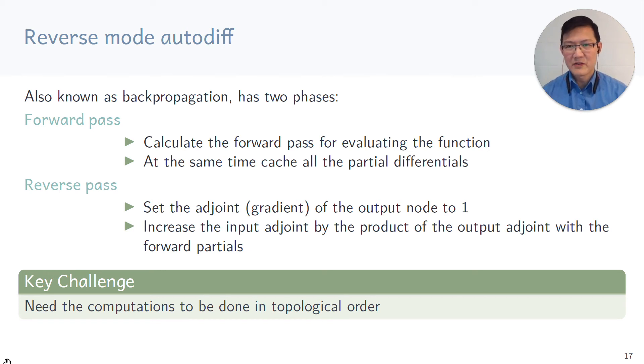So let's change gears to reverse mode automatic differentiation. This is also known as backpropagation and it has two phases. There's a forward pass and a reverse pass. The forward pass is calculated as per normal. When you evaluate a function, you need to accumulate these terms anyway. The real important part here is as you're computing this function, you cache all the partial differentials as you're evaluating forward. Now, on the reverse pass, you set the adjoint of the output node to one, because the gradient of the output node to itself is clearly one. And then you increase the input adjoint by the product of the output adjoint with the forward partials that you accumulated in the forward path. The key challenge to implement this efficiently is that computations need to be done in topological order.